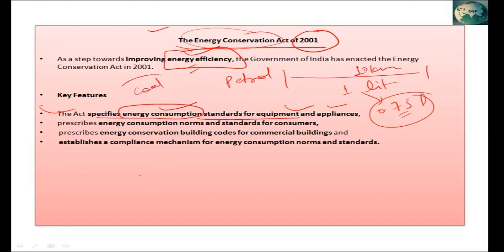If we use more electricity, we need more coal to generate it. Using more coal produces more pollutants and greenhouse gases, which increases emissions and drives climate change. So the Act works to reduce energy consumption to a defined standard.